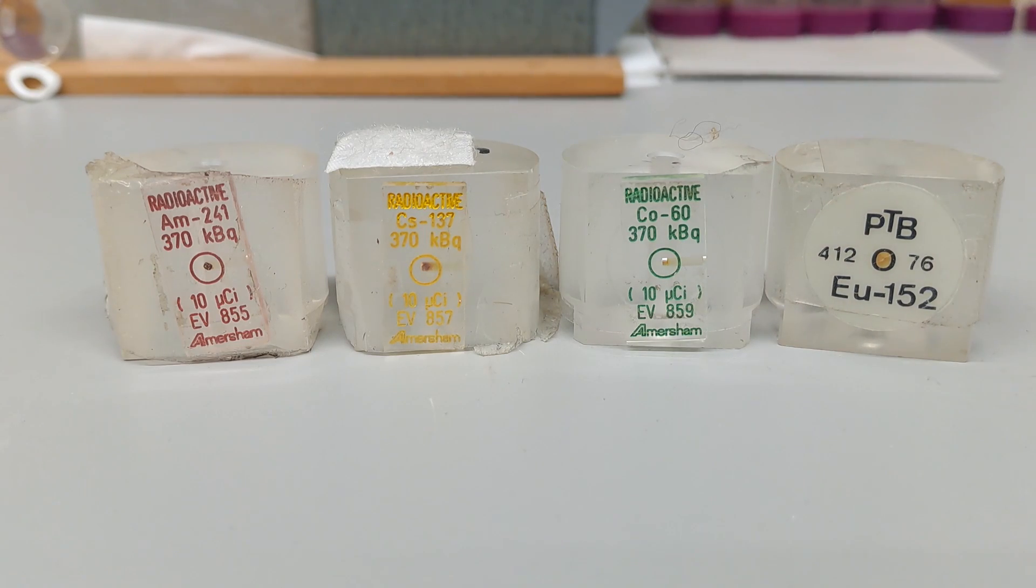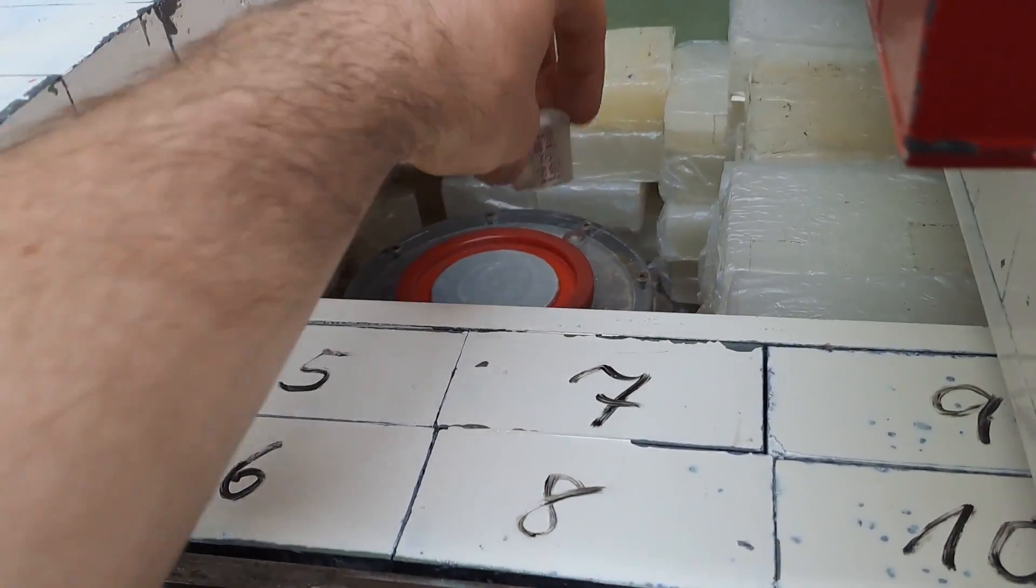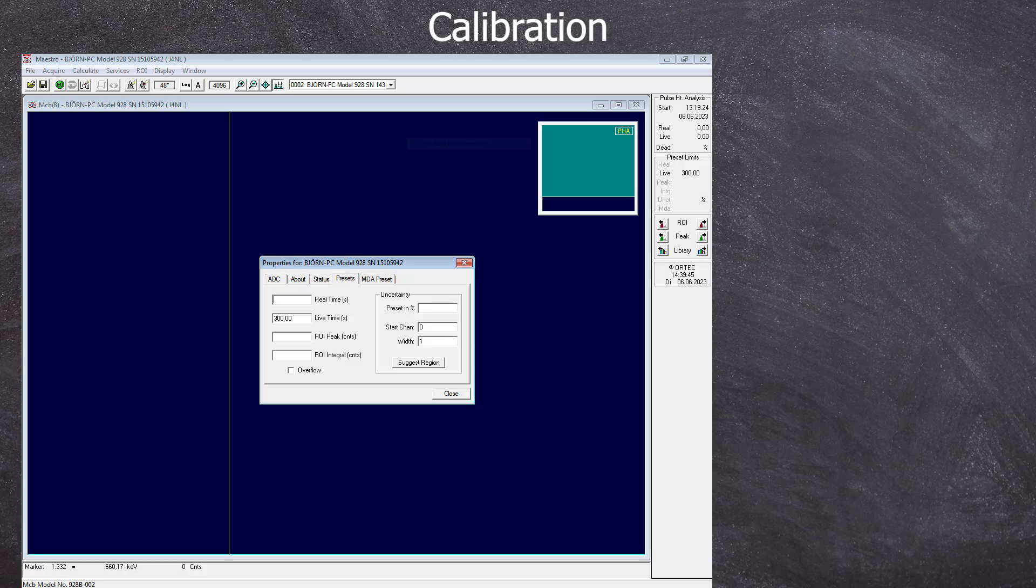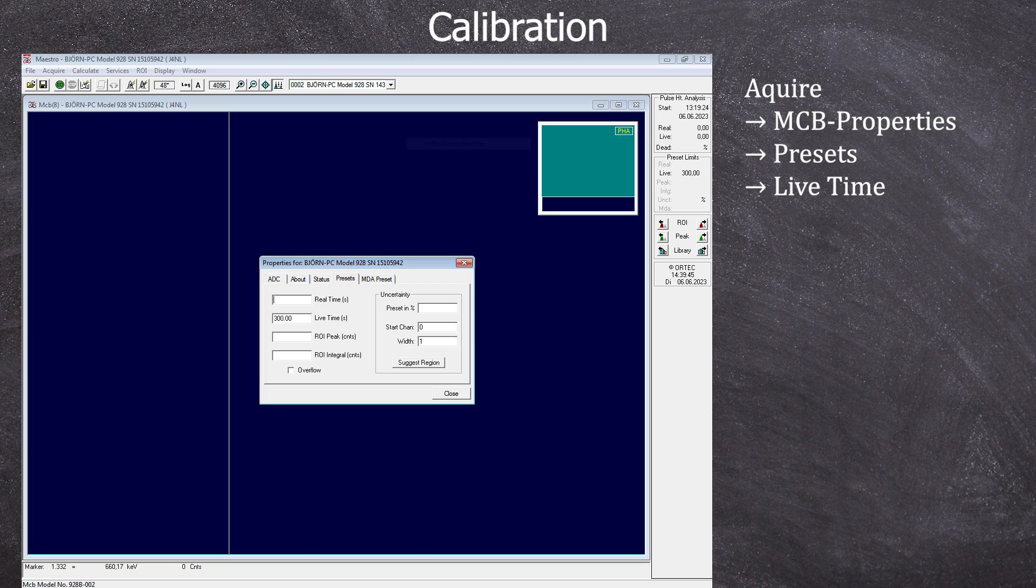Let's begin with Americium. To take a spectrum, you go to Acquire, then MCB properties, and then select Presets to enter a lifetime of 300 seconds, which is sufficient for a solid calibration in 5 minutes.